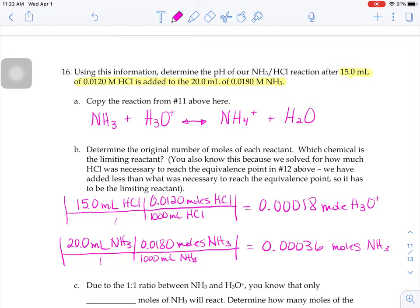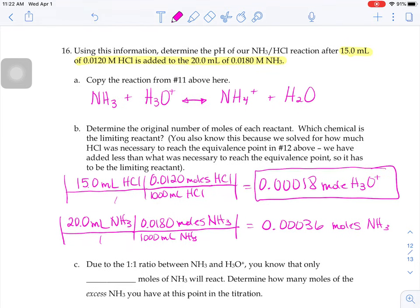Because the H3O+ and the NH3 react in a one-to-one ratio, as you can see in part A above, that must mean that the H3O+ is our limiting reactant. We're going to run out of that first because we've only added 0.00018 moles worth of it to our flask. Because there's a one-to-one ratio between our NH3 and our H3O+, that means that out of that 0.00036 moles of ammonia that we have, only 0.00018 of those are going to actually react.